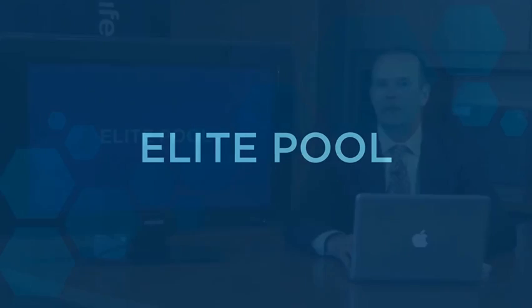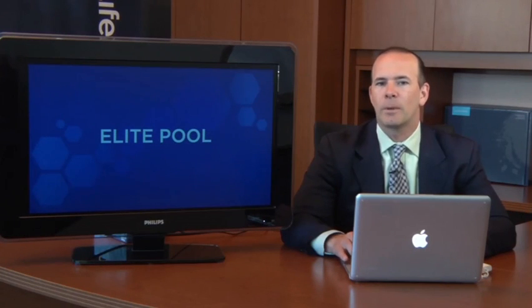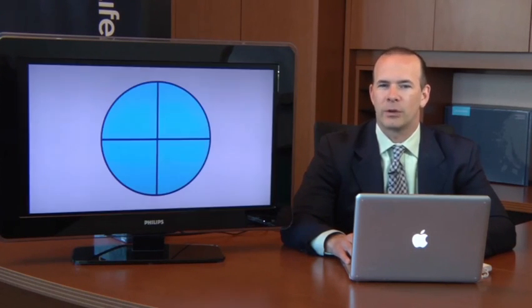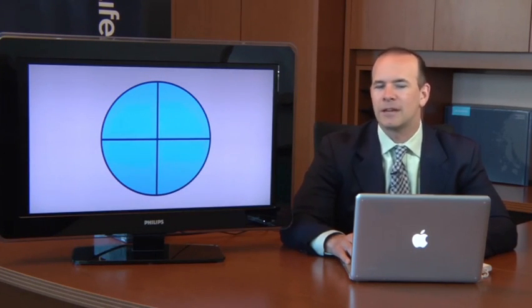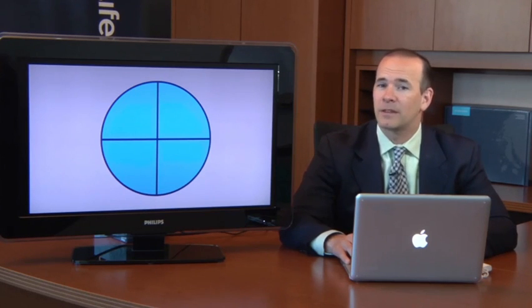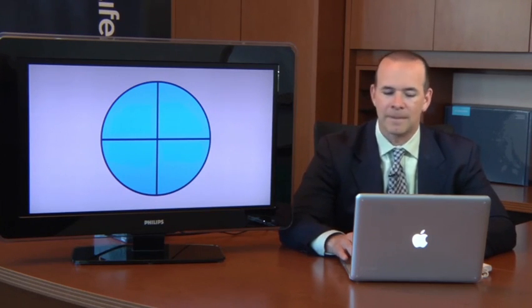Now the sixth bonus that we have is the elite pool. We put 4% of total global sales into a pool and we divide it into four parts. Now this is paid to the top ranks, or in other words, the elite ranks of the company.